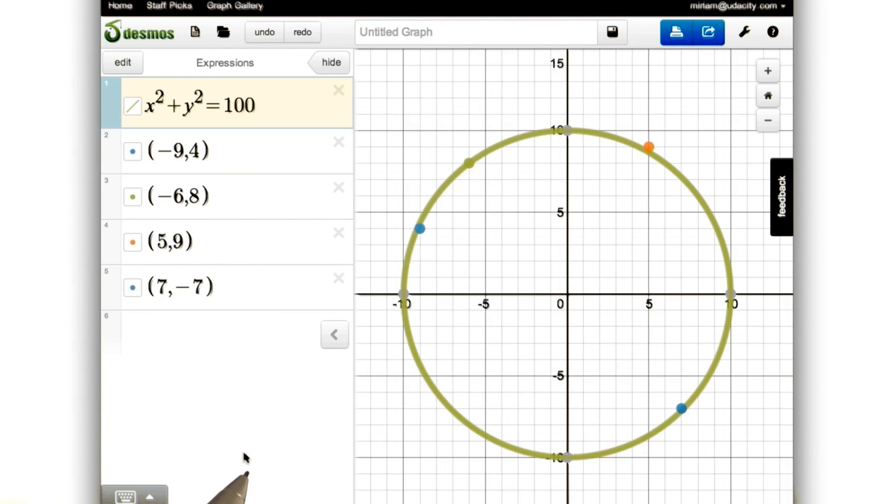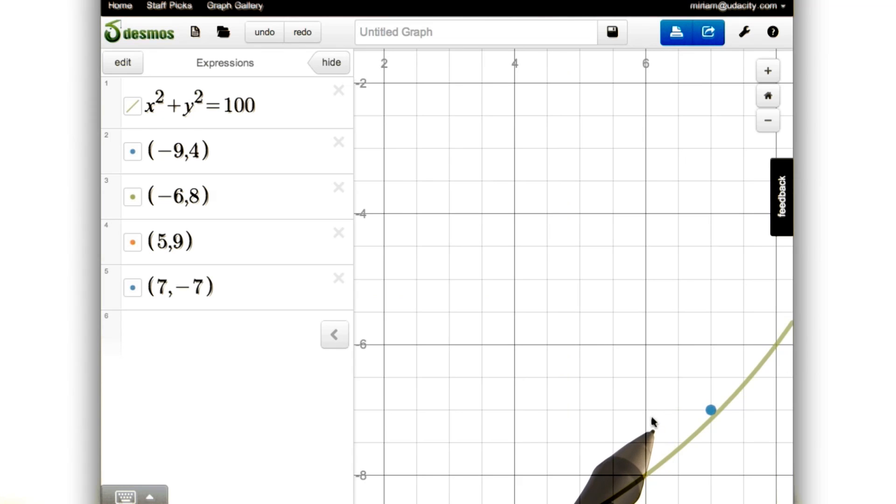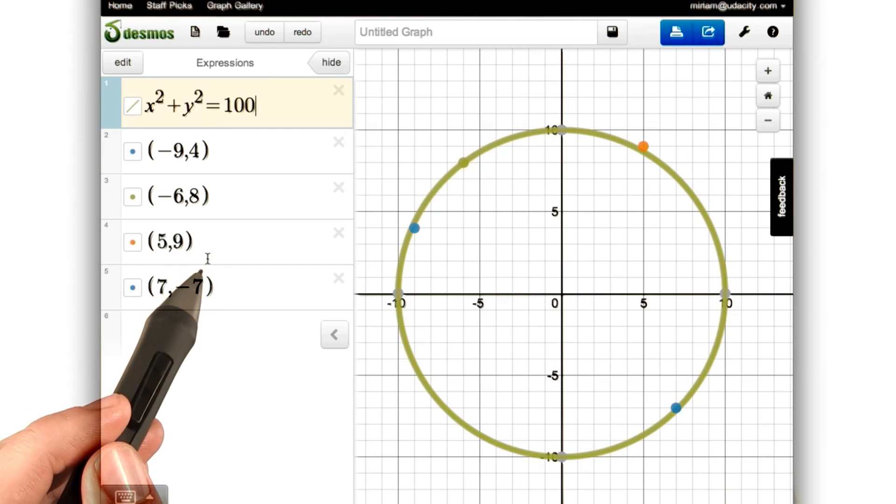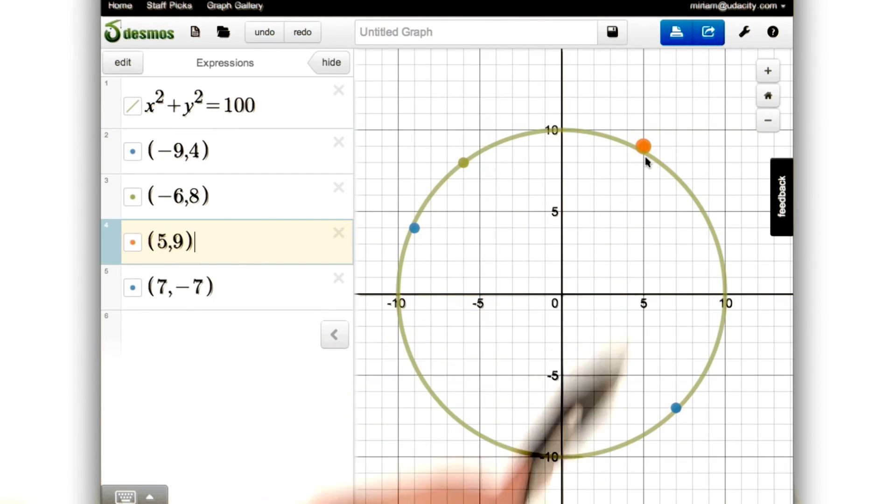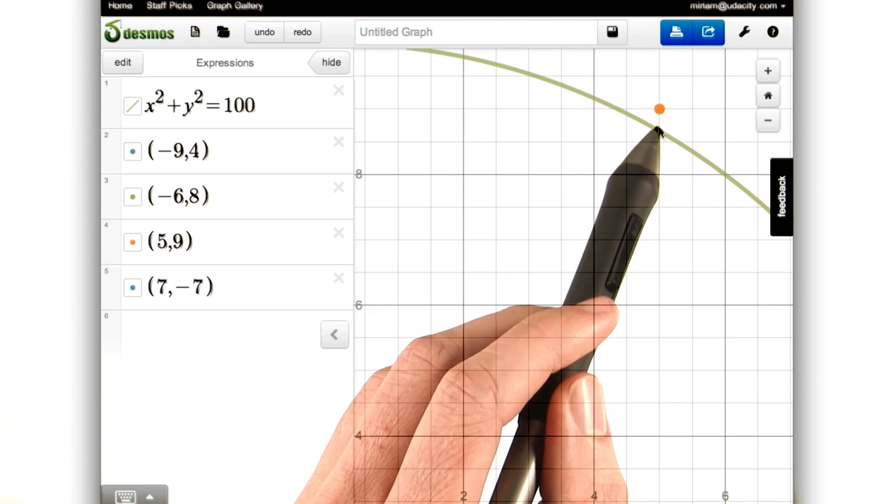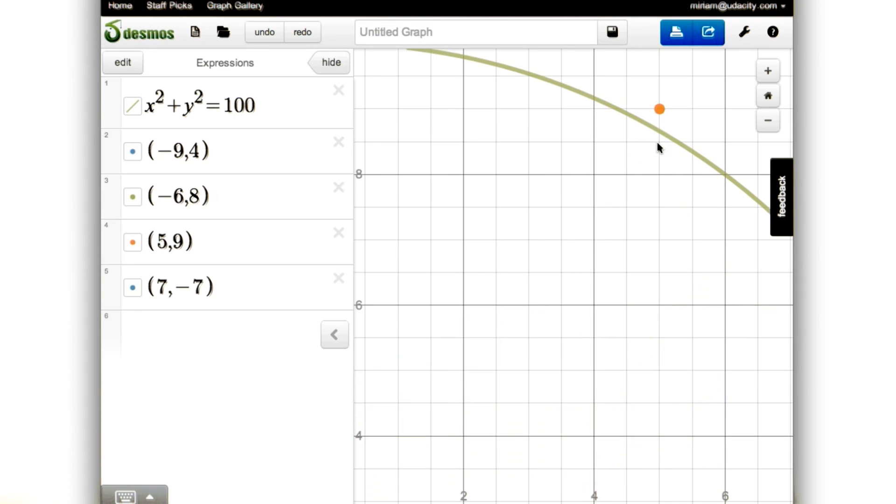The other point that we said was inside the circle is (7, -7), this point down here. Zooming in on this region, we see that it's just shy of being on the circle. And that should make sense because we found that the distance from the origin to this point was the square root of 98, almost the square root of 100, which is 10. And finally, we looked at the point (5, 9), this orange point out here. Zooming in, we see that yes, it's just outside of our circle.